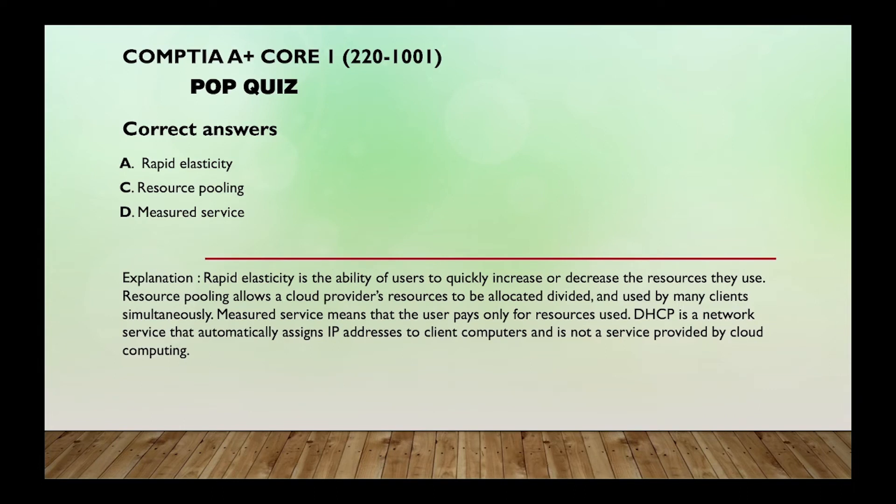Correct answers are A, C, and D. Rapid elasticity is the ability of users to quickly increase or decrease the resources they use. Resource pooling allows a cloud provider's resources to be allocated, divided, and used by many clients simultaneously. Measured service means that the user pays only for resources used. DHCP is a network service that automatically assigns IP addresses to client computers and is not a service provided by cloud computing.